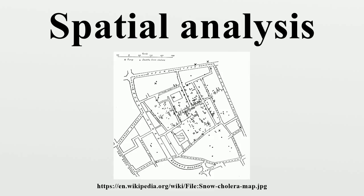It is also appropriate to view spatial dependency as a source of information rather than something to be corrected. Locational effects also manifest as spatial heterogeneity, or the apparent variation in a process with respect to location in geographic space. Unless a space is uniform or boundless, every location will have some degree of uniqueness relative to the other locations. This affects the spatial dependency relations and therefore the spatial process. Spatial heterogeneity means that overall parameters estimated for the entire system may not adequately describe the process at any given location.